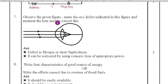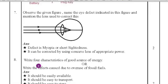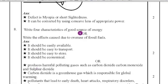We have to find out which type of eye defect is shown and which lens is used to correct it. The defect is myopia, or short-sightedness. It can be corrected by using a concave lens of appropriate power. Eighth question: write four characteristics of a good source of energy, or write the effects due to overuse of fossil fuels.